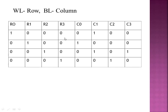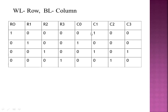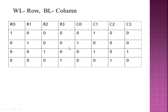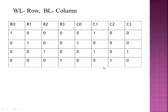When we enable the first wordline (row 0), the data read out is 0, 1, 0, 0. For the second wordline (row 1), the data is 0, 1, 0, 0. For wordline 2, the data is 0, 1, 0, 1. For wordline 3, the data is 0, 0, 1, 0. This table summarizes the stored data in the 4x4 ROM.